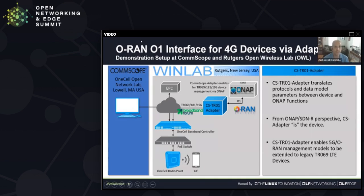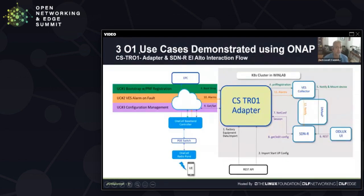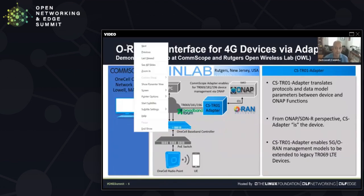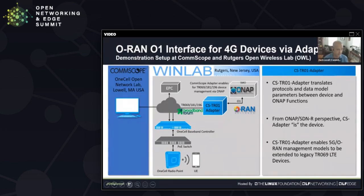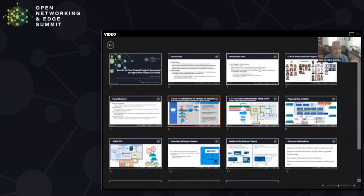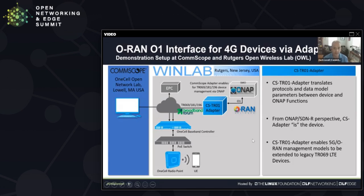For this plugfest, what we wanted to demonstrate was that legacy 4G devices implemented using 3GPP-compliant data models could be adapted to follow an O1-compliant service management model. This is done in recognition that Open RAN really needs to consider all aspects of the network — more than just radios — and requires uniform service management orchestration interfaces with an ability to also manage legacy devices. For this demo, we deployed a fully functional end-to-end setup at the Rutgers Open Wireless Lab, using a mix of real and simulated one-cell CRAN baseband controller devices, each communicating to an instance of our TR01 adapter. The adapter translates protocols and data model parameters between the device and the ONAP functions, so from the perspective of ONAP or the service management orchestration layer, the adapter is essentially the device itself.